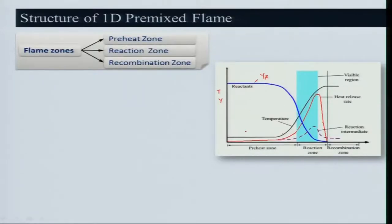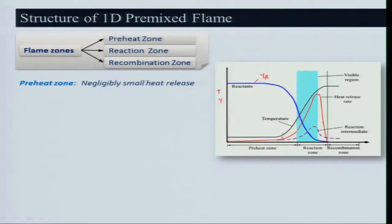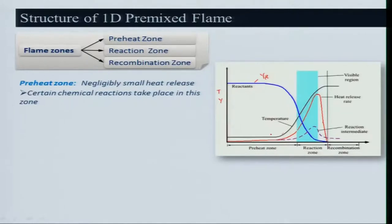In the preheat zone, the temperature is not really going up — it is only slowly increasing because there is negligible heat release in this domain. The heat release is very very small, so temperature also rises only slowly. Certain chemical reactions do take place here — species like HO₂ or OH may be occurring because the temperature is slightly rising. But if I compare this preheat zone with a human life, nothing really productive is happening.